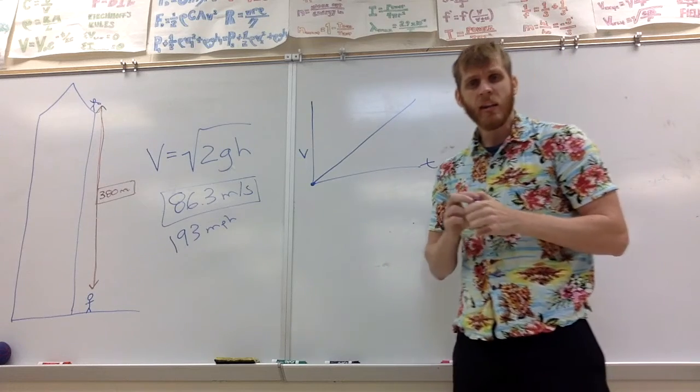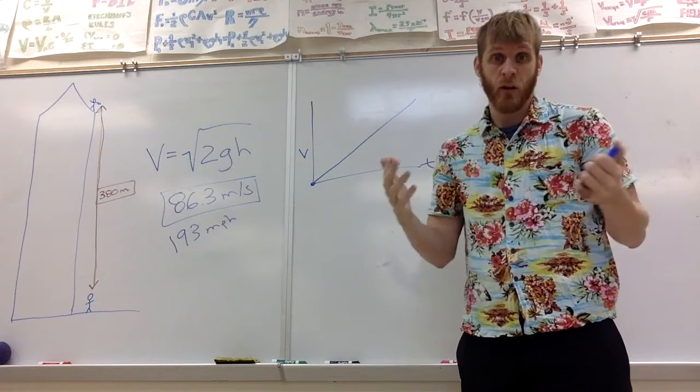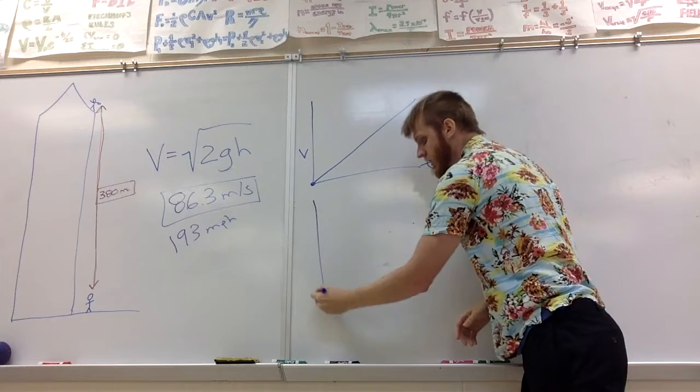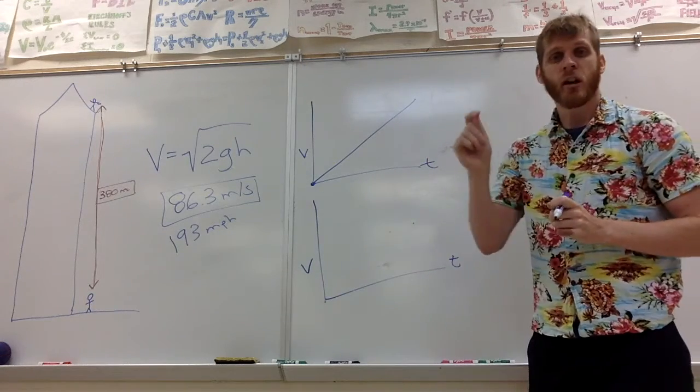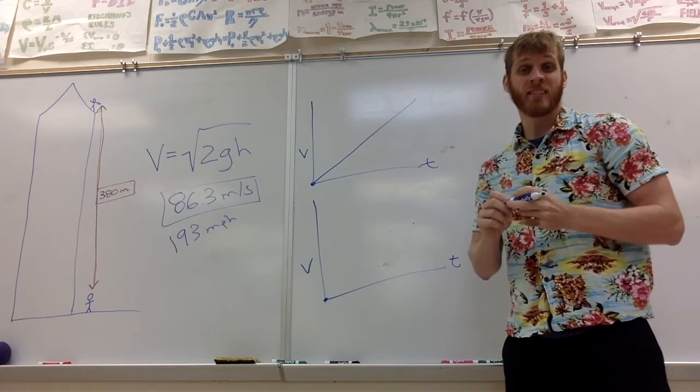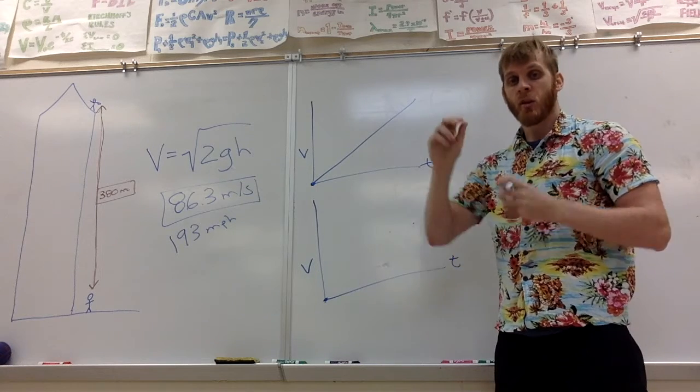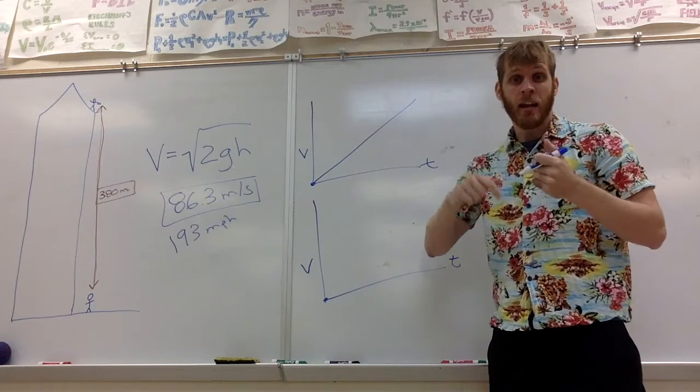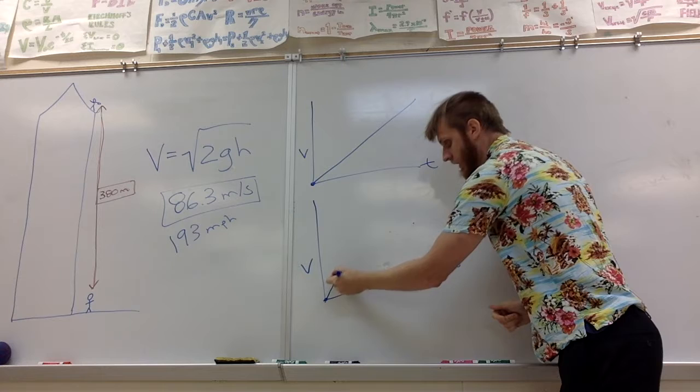But a penny or a ballpoint pen or any object that's falling through a fluid, like air, is going to have a slightly different graph. Its velocity versus time graph looks something like this. It still starts off at rest. So it has zero. And it's going to accelerate, but it's going to accelerate a lot slower. And then at some speed, the weight of the object and the drag force will equal out and it will no longer accelerate. So its graph will look something like this.